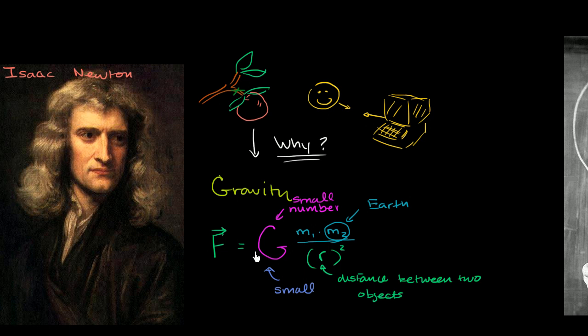Just to get a sense of that, this G, this big G, this constant of proportionality, just to get a sense of how small it is, it's approximately 6.67 times 10 to the negative 11th Newton meters per kilogram squared. But I want to make it clear that this is a super small number, 10 to the negative 11th. If I were to just write 10 to the negative 11th, it would be 0.0 and then we would have 1, 2, 3, 4, 5, 6, 7, 8, 9, 10, 11 zeros.